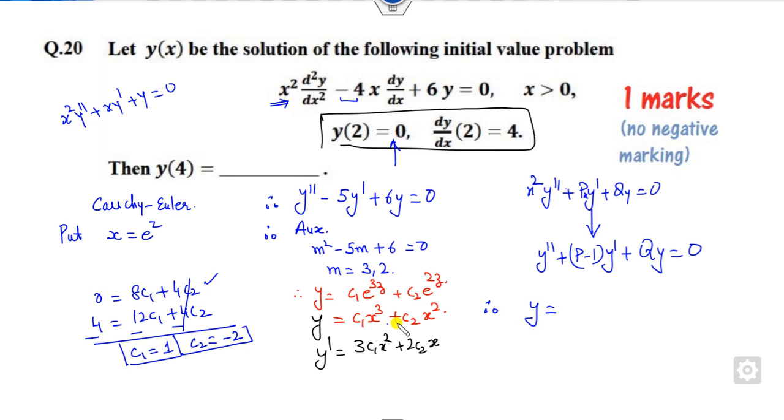You need to find the value of y(4). At x = 4, this will be 64 - 32. When you subtract them, the answer is 32. This is the correct answer for this question.